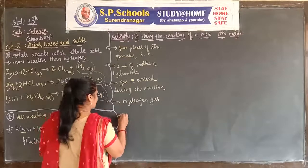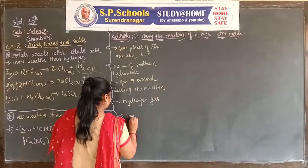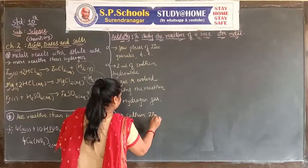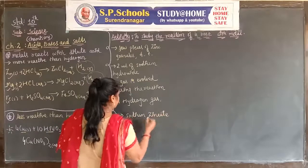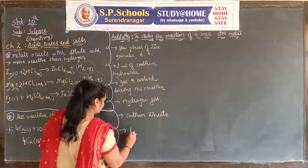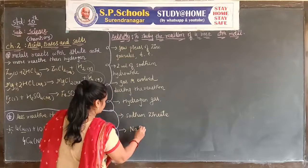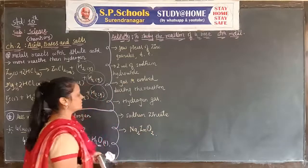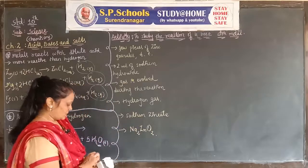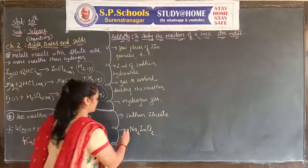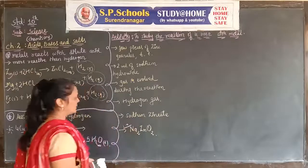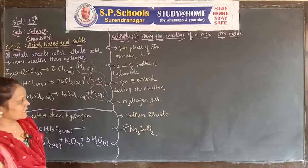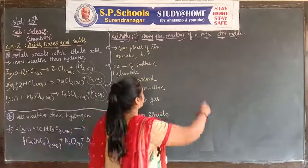And hydrogen gas is evolved during the reaction. As a byproduct, we get sodium zincate. The molecular formula of sodium zincate is Na₂ZnO₂. This formula is important — remember it as a key term.